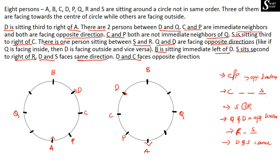The last information is: D and C face opposite directions. So if D is facing center, C has to face outward; if D is facing outward, then C has to face inward. Now we can substitute this information. C's third right must be S — so C is facing outward, and C's third right is one, two, three — S has to be substituted there. Between S and R there is a gap of one person, so with S here — one person gap — R has to be substituted at the next position.